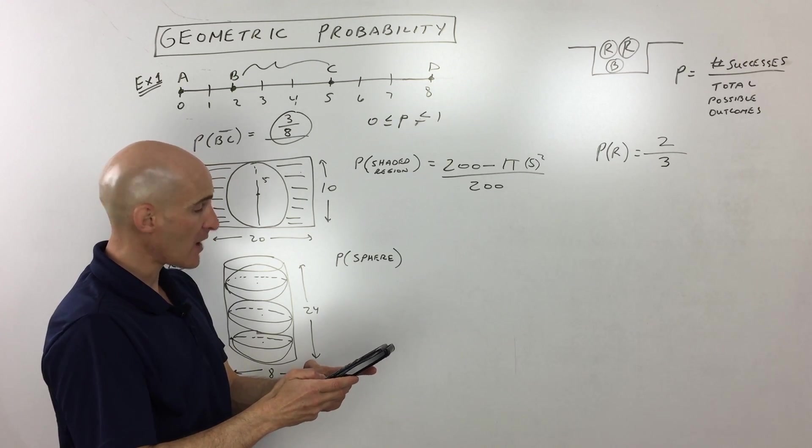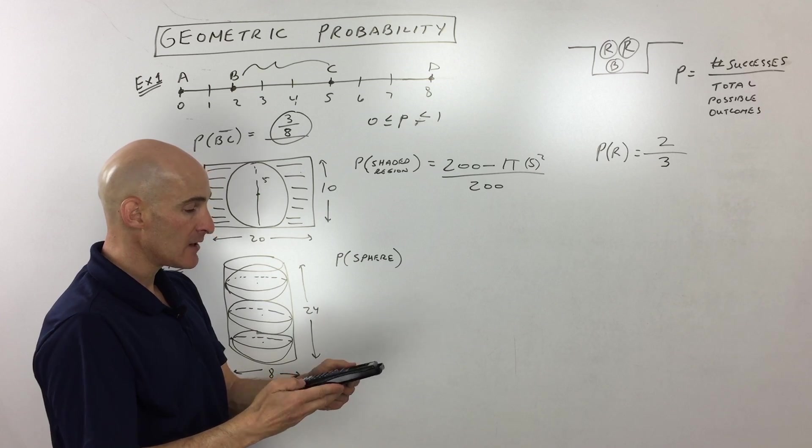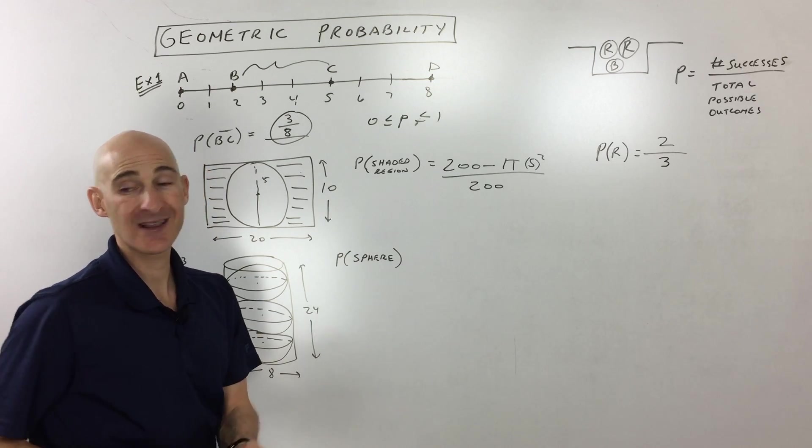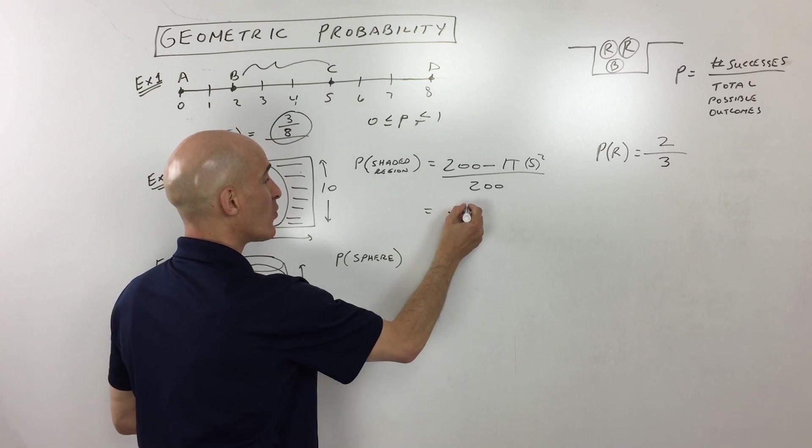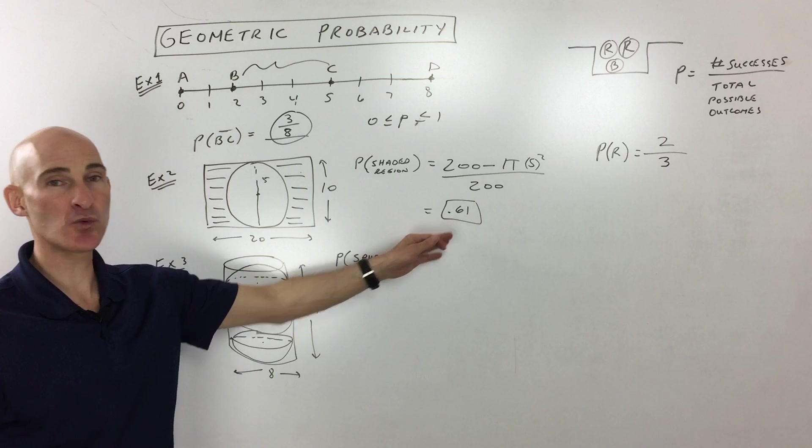It's 121 approximately divided by 200. So it's coming out to about 0.61, or in other words, about a 61% chance, but the probability is 0.61.